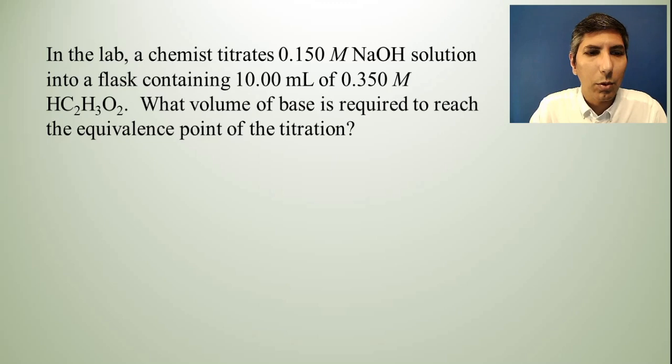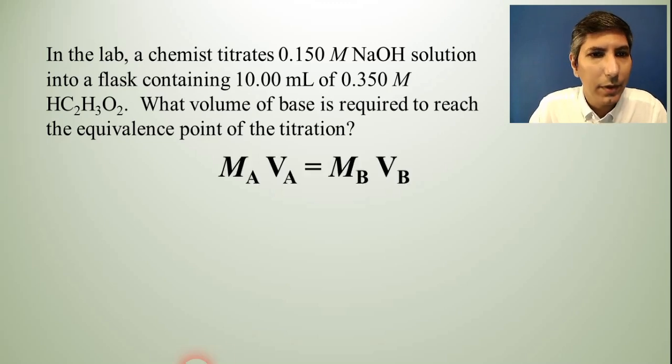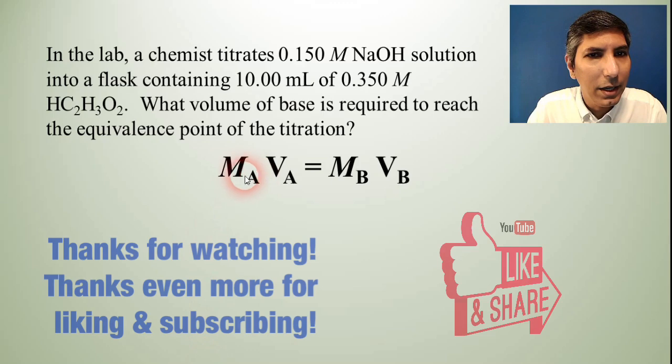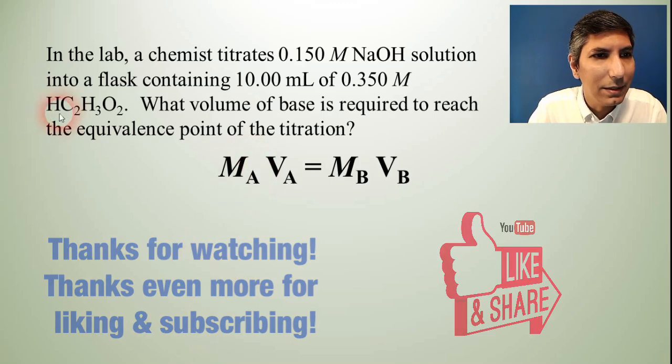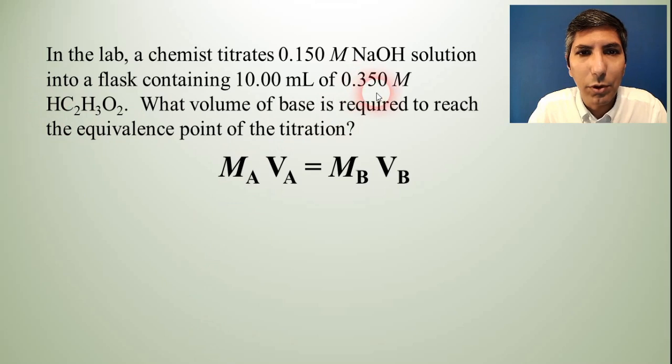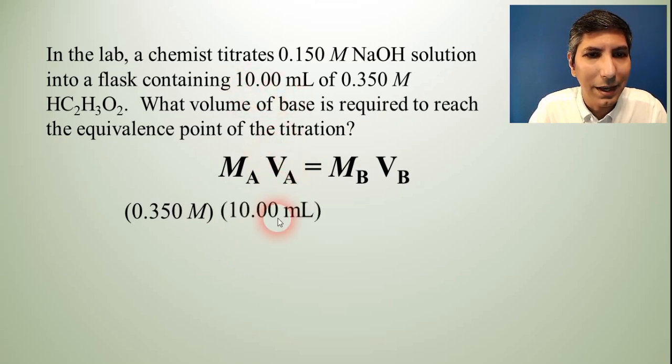So once again, we're going to use this titration equation and we're just going to plug and chug to solve for the answer. The molarity of the acid is given to us in the problem. It says the acid, this acetic acid here, is 0.350 molar. So that goes in for M sub A. The volume of the acid is also given to us. It's 10 milliliters. So that goes in for V sub A.